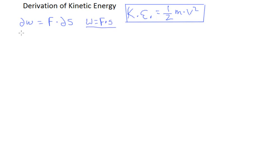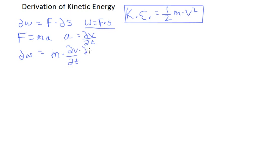Then we're going to go immediately to force equals ma, that's Newton's equation. And of course, a is equal to dv/dt, change in velocity with time. I'm going to substitute into our first expression. So dw is equal to m times dv/dt times ds.